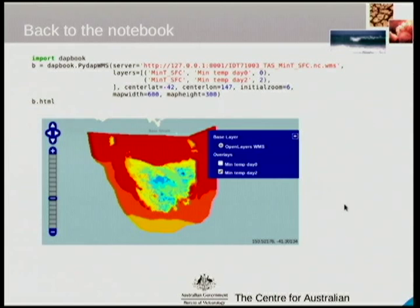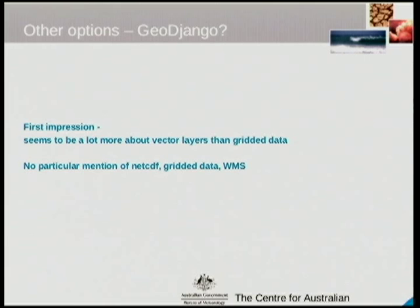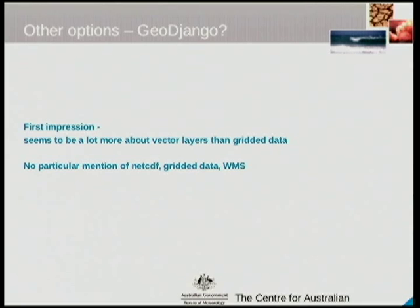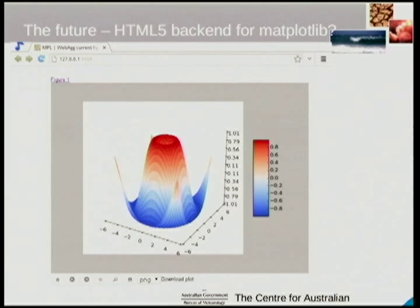I looked at a couple of other options. I had a look at GeoDjango but it seemed not really concerned with gridded data. There is some work already done — there may be an HTML5 backend for matplotlib coming very soon. This would let you interact with graphs in a way very similar to zooming and panning on maps, essentially giving us a WebAgg backend with the same power as a QtAgg or TkAgg backend.